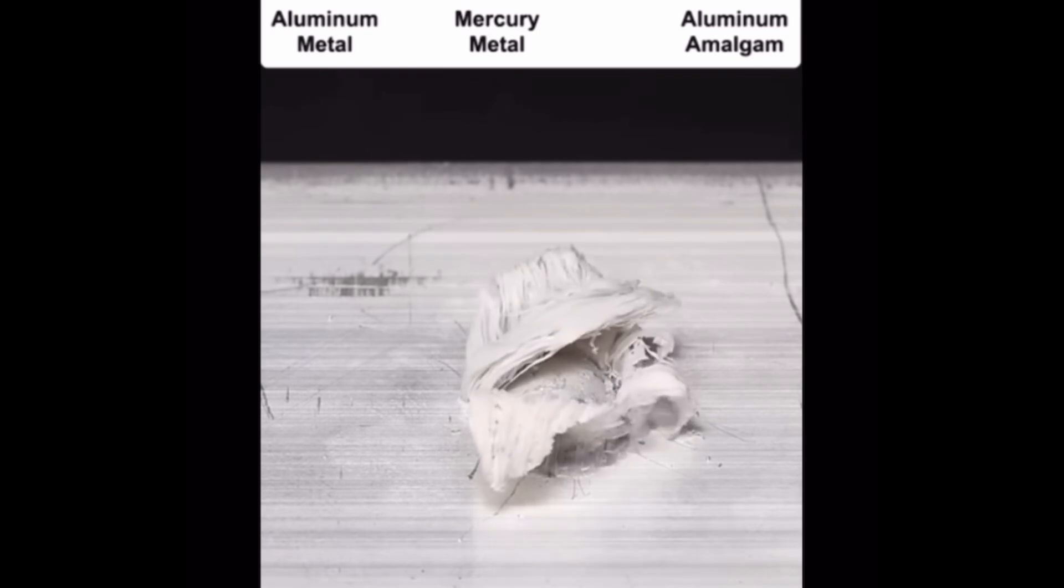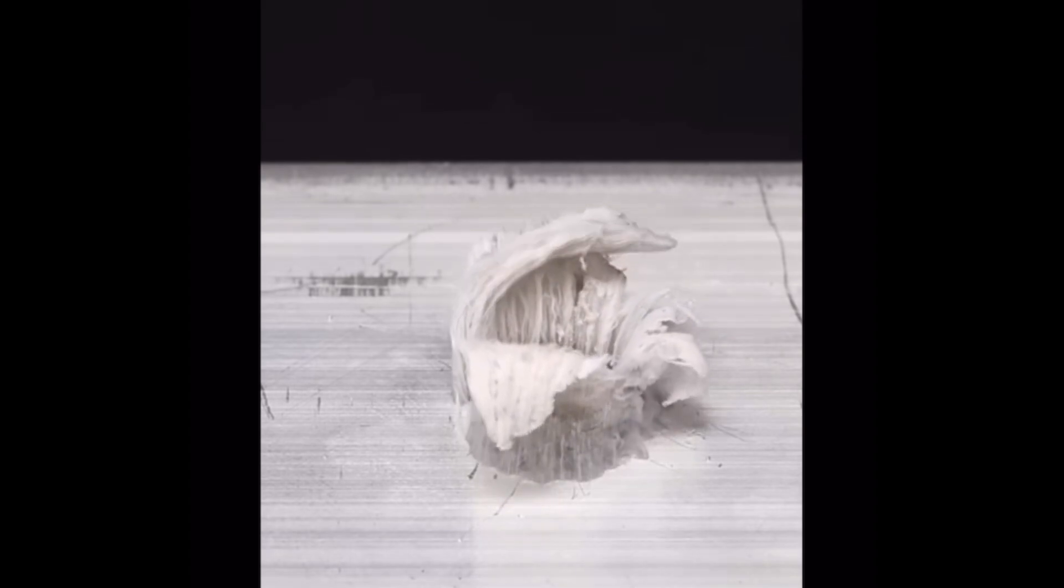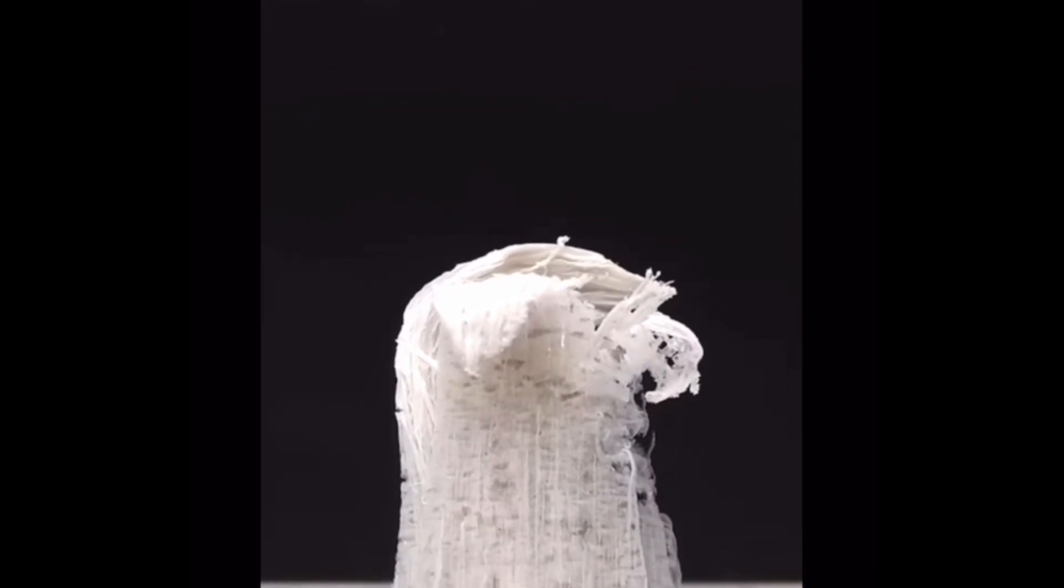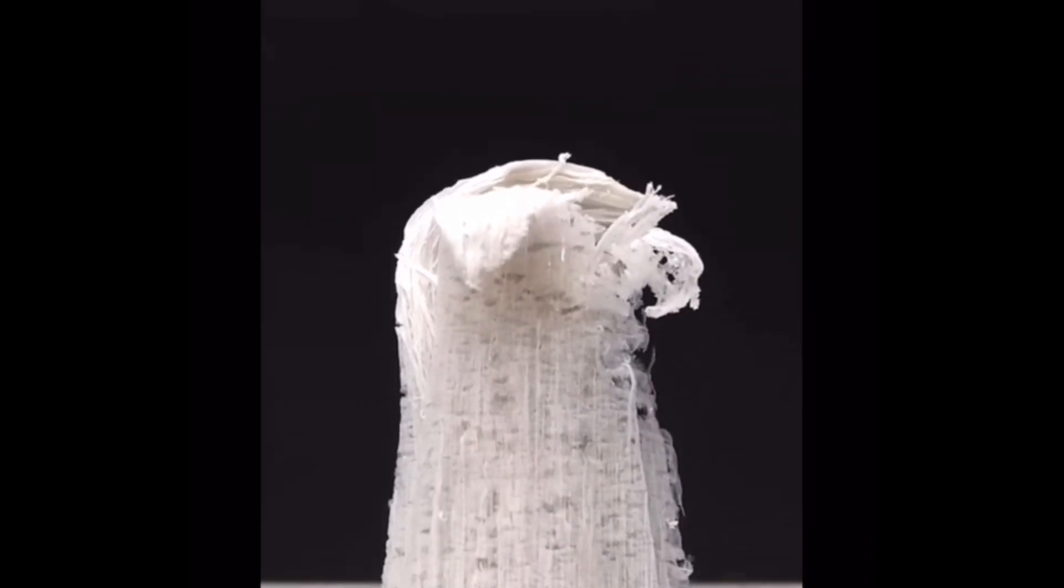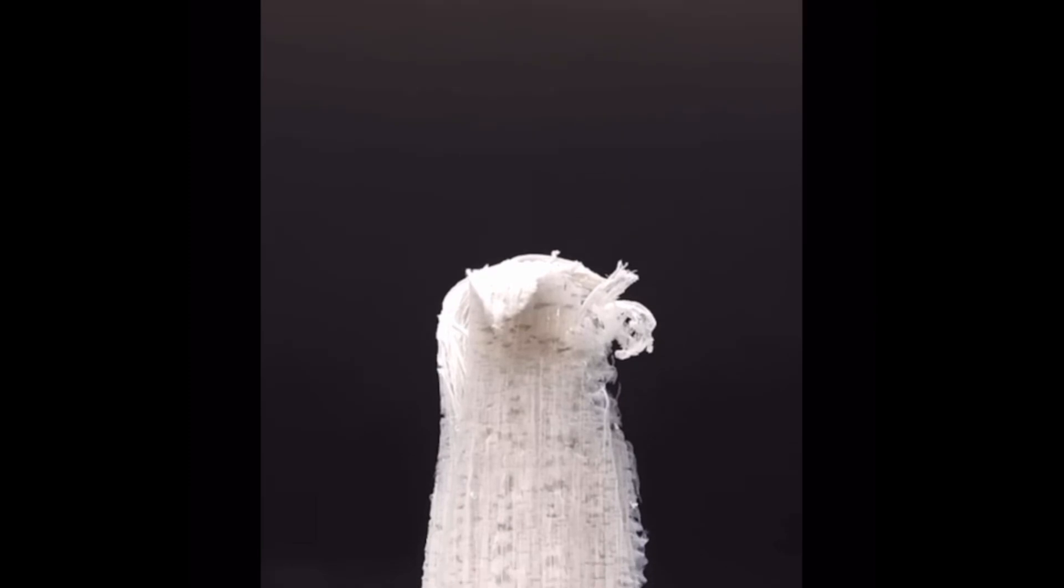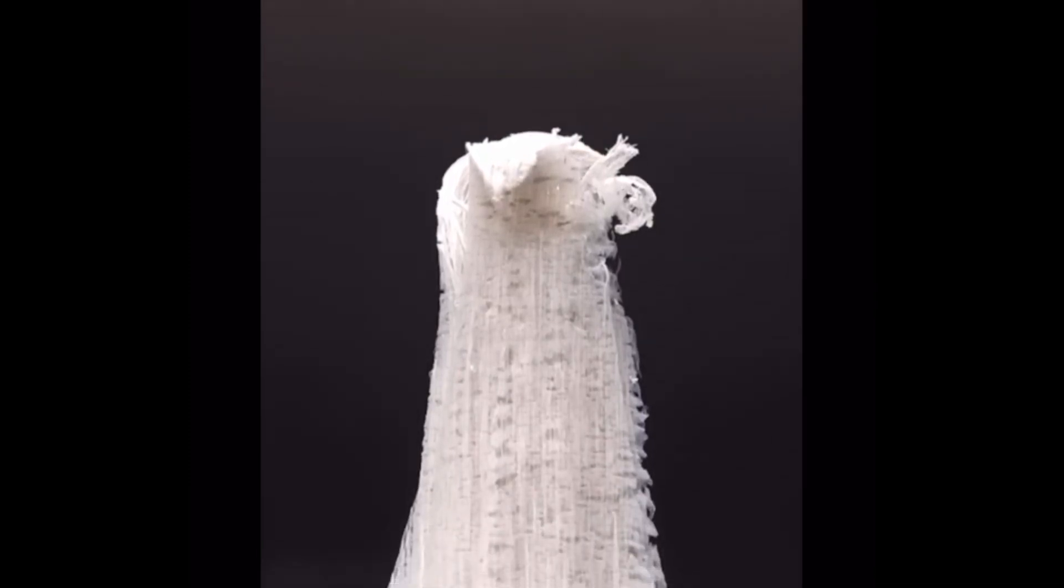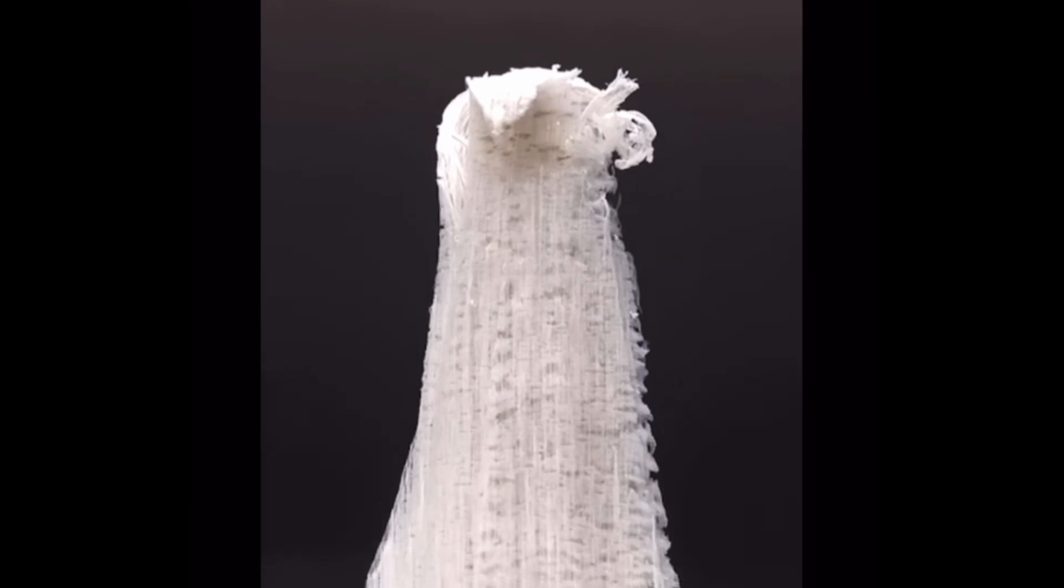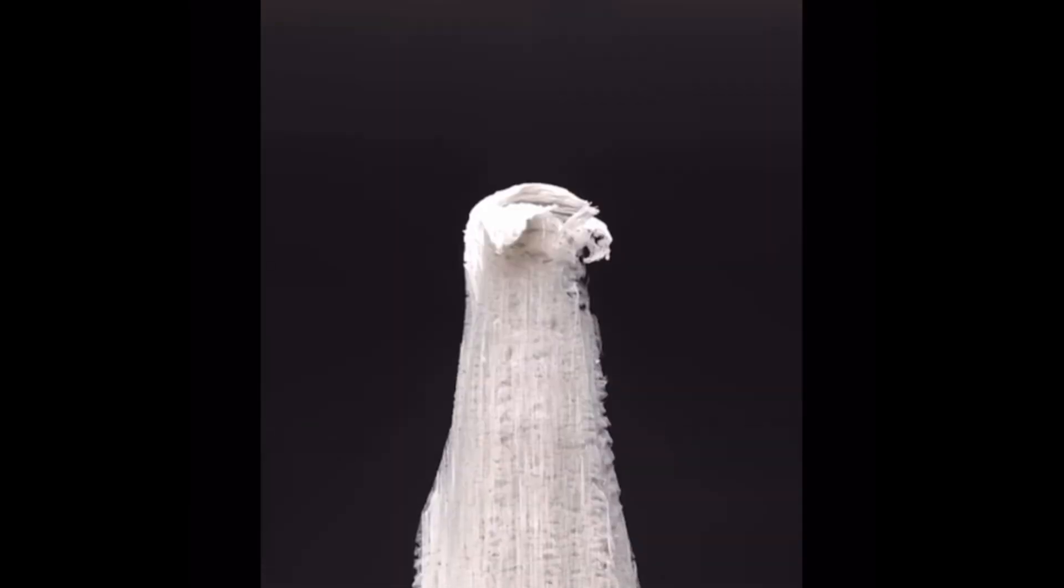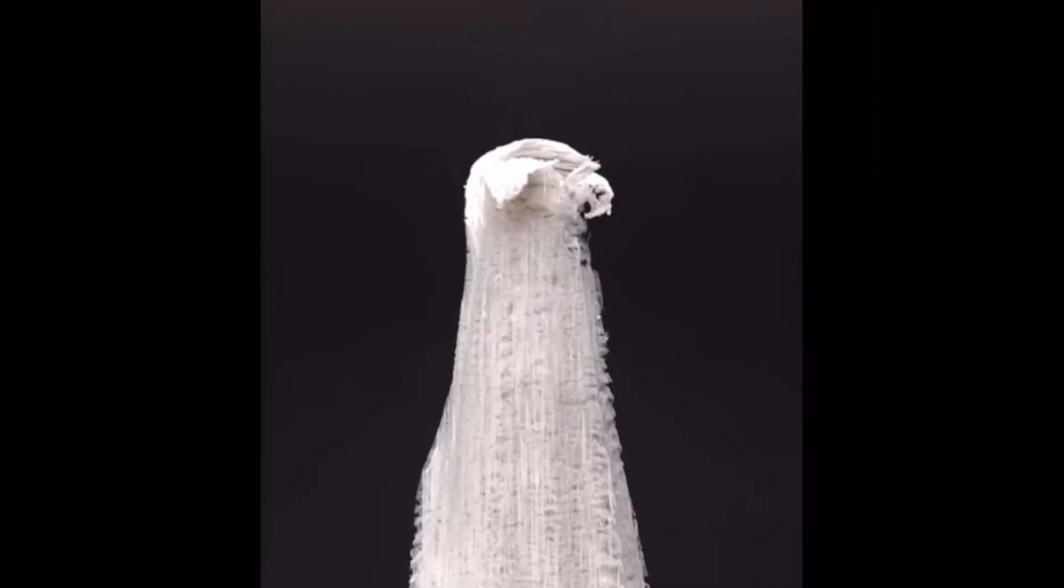When mercury touches aluminium it forms an amalgam, a mixture of the two metals. Tiny hair-like structures start growing from the surface. These hairs are actually aluminium amalgam breaking down as it reacts with oxygen in the air. The result? A layer of white aluminium oxide forms, giving it a unique texture.